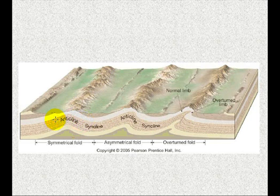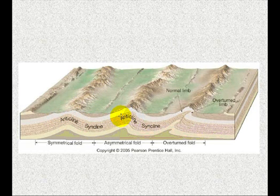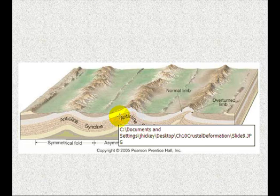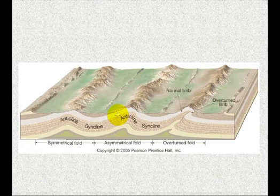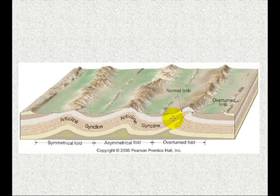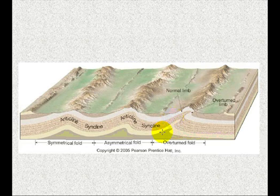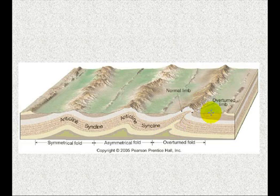Basically, even on symmetrical anticlines things are significantly different. We have a shallow and a steeper limb on an asymmetric fold. In an overturned system, you really want to think about the axial plane — that thing is almost horizontal. This system has been overturned and deformed that much.